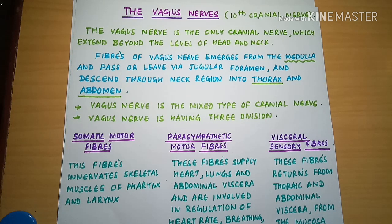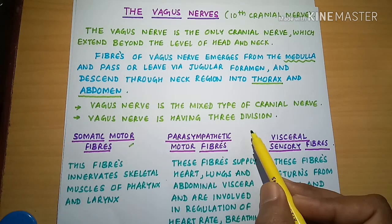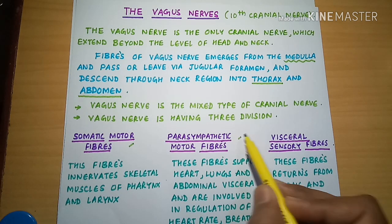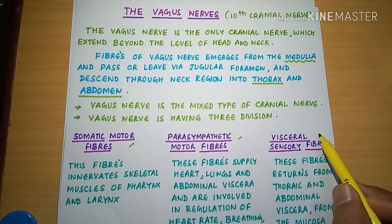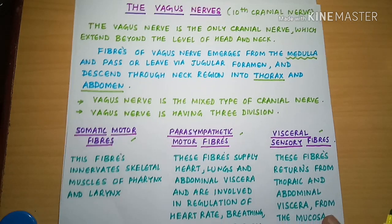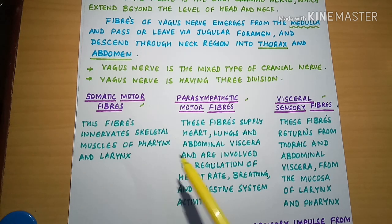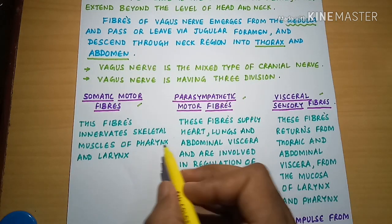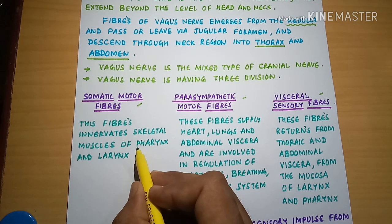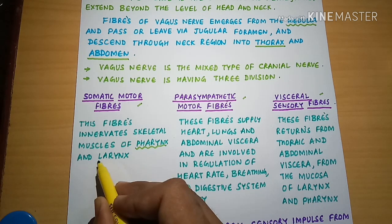The Vagus Nerve has three divisions: Somatic Motor Fibre Division, Parasympathetic Motor Fibre Division, and Visceral Sensory Fibre Division. The Somatic Motor Fibre Division innervates the skeletal muscles of pharynx and larynx.